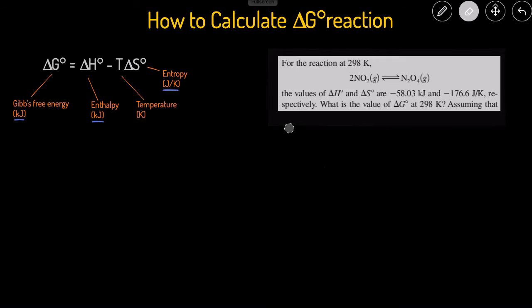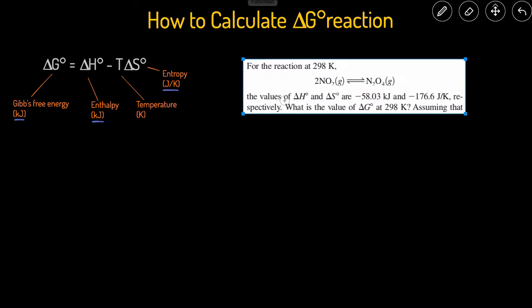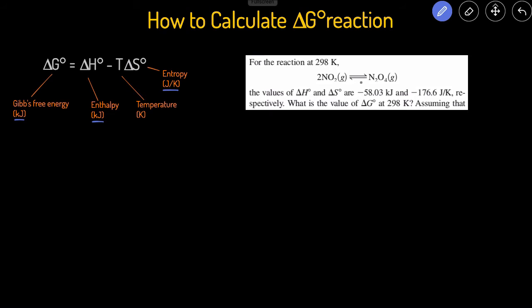Let's take a look at an example problem. In this problem, we're given the balanced chemical reaction and the delta H value. The delta H standard value is negative 58.03 kilojoules, and the delta S standard value is equal to negative 176.6 joules per K. So again, you see this is in kilojoules, this is in joules.